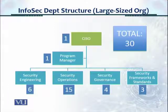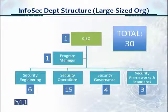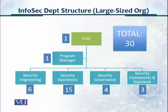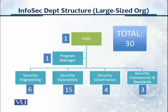These are the approximate numbers for a large-sized information security team. You have one CISO, one program manager, and about six security engineering staff — one each for network security, system security, application security, and database security, plus two more covering other domains. In security operations, you have maybe five people sitting in shifts — monitoring antivirus, IDS/IPS, SIEM events, and doing password management activities.